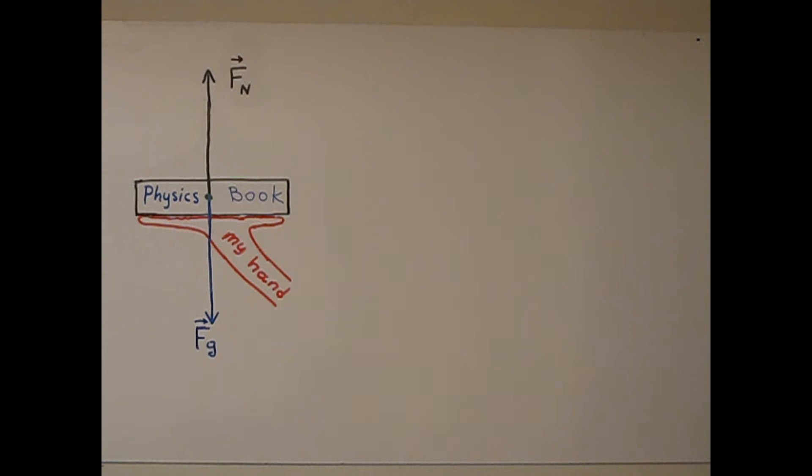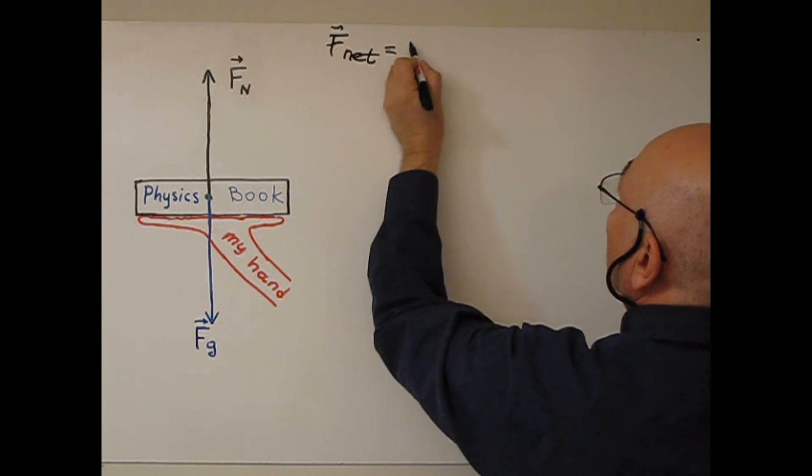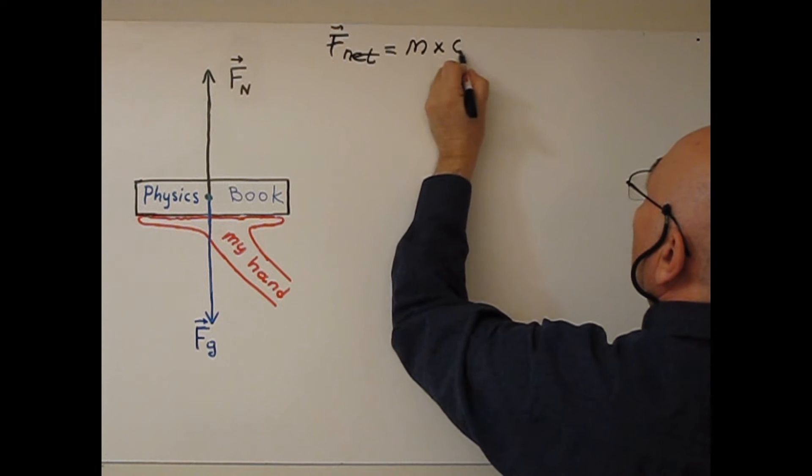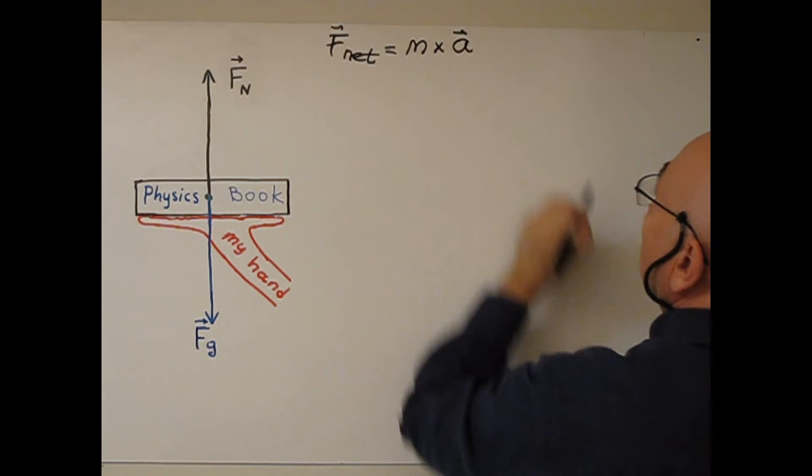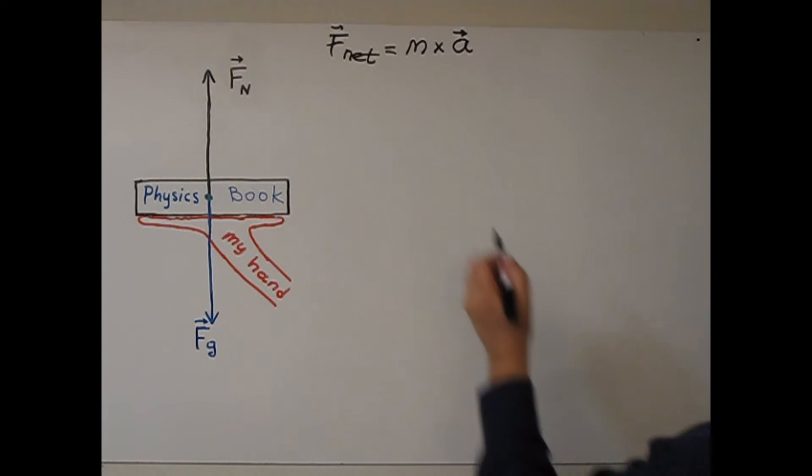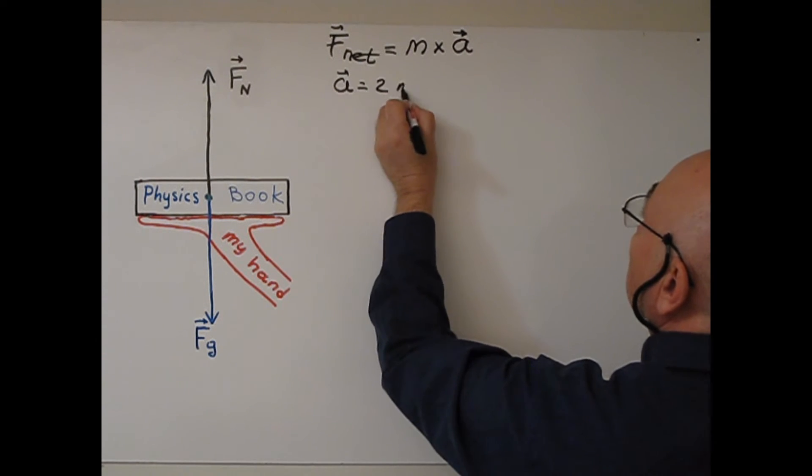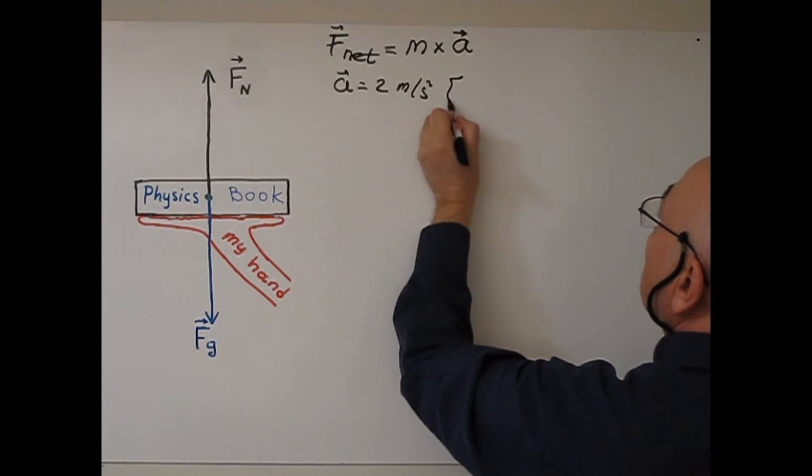So net force is not zero. Because net force will be mass times acceleration. Let's say the acceleration is 2 meter second square up.